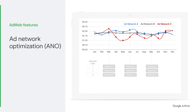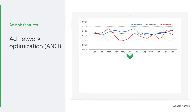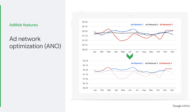Then, AdMob dynamically reorders networks in the Mediation waterfall based on these eCPM values, so that the ad network with the highest CPM gets the opportunity to serve ads to your apps. ANO ensures you won't miss out on any spikes in CPM performance from your mediated ad networks.